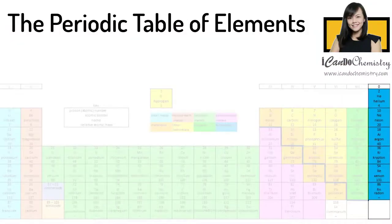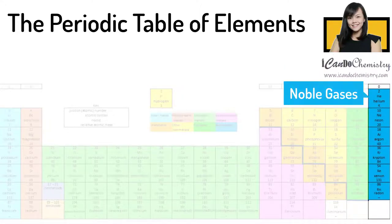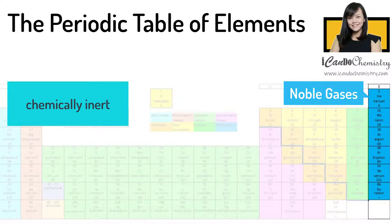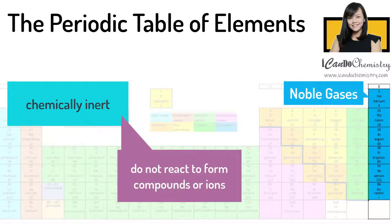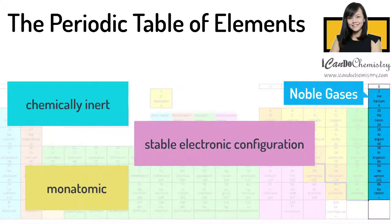The elements in group 0 or group 8 are called noble gases. The noble gases are chemically inert, which means they are chemically unreactive elements. They do not react to form compounds and ions. This is because their electronic configurations are stable. They are monatomic, meaning they exist as single atoms.